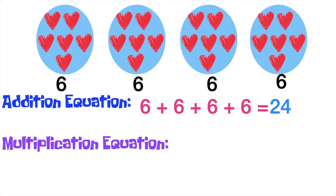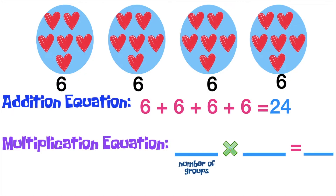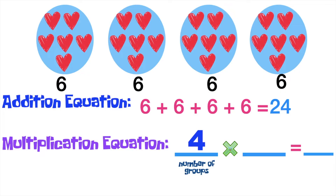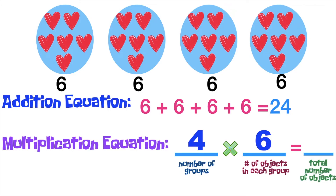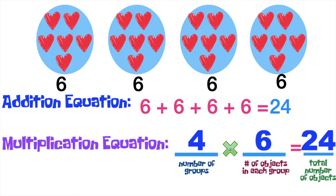Let's write the multiplication equation. Remember, the first factor is the number of groups. Let's count the groups together: one, two, three, four. So, we have four groups. Let's proceed to the second factor — the number of objects in each group. How many hearts do you see in each group? That's correct! We have six hearts in each group. So, four times six is equal to blank. To find the product, we need to find the total number of objects. How many hearts do you see? That's correct! We have twenty-four hearts in total. So, four times six is equal to twenty-four.